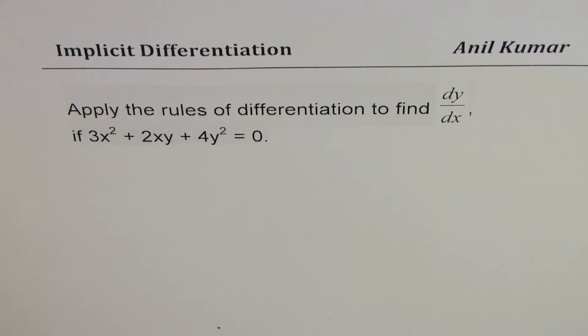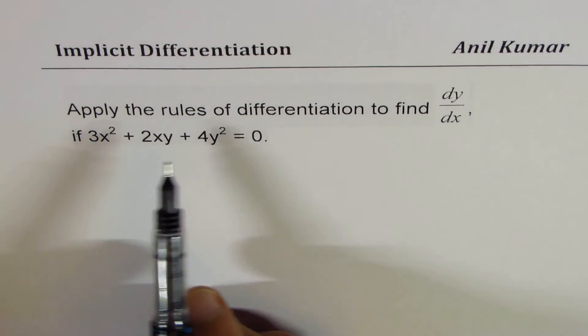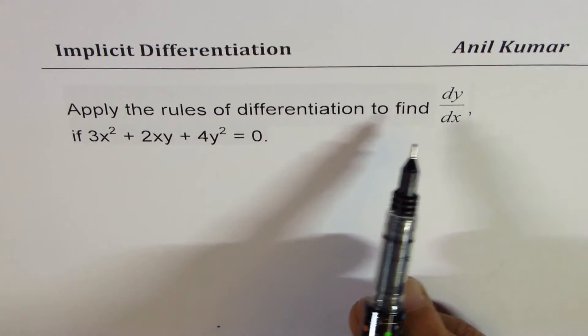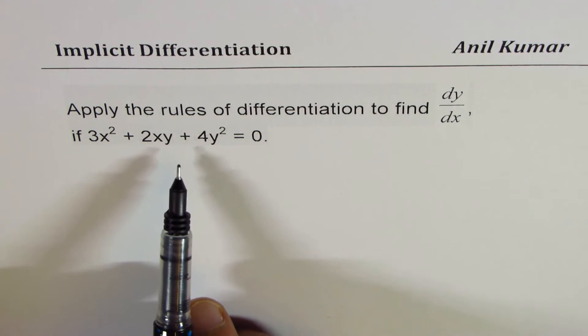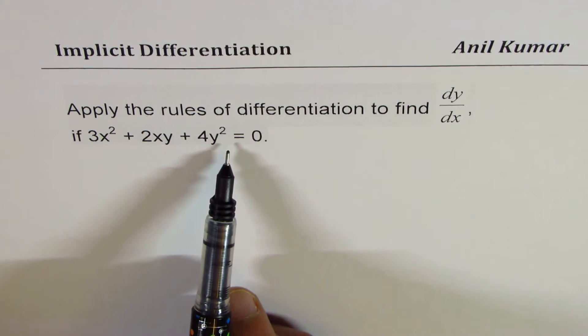I'm Anil Kumar. Here is an example of implicit differentiation. Apply the rules of differentiation to find dy/dx if 3x squared plus 2xy plus 4y squared equals 0.